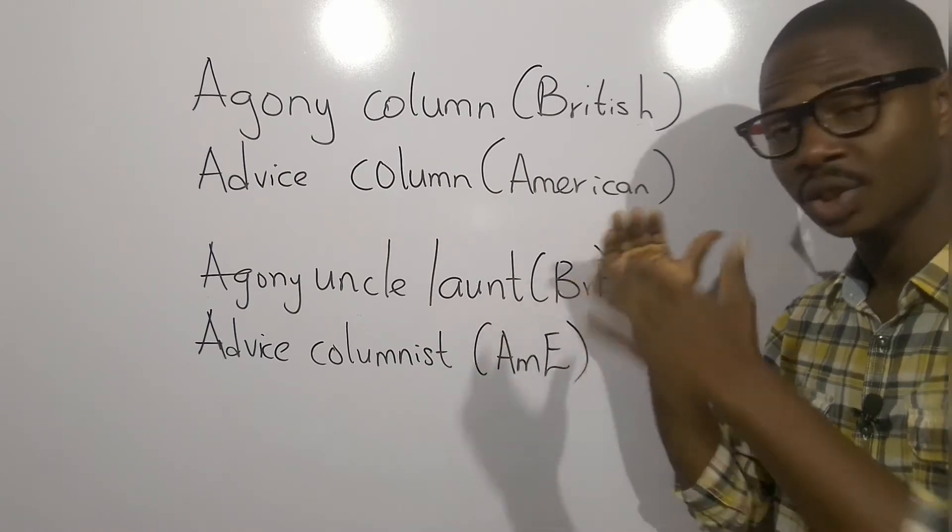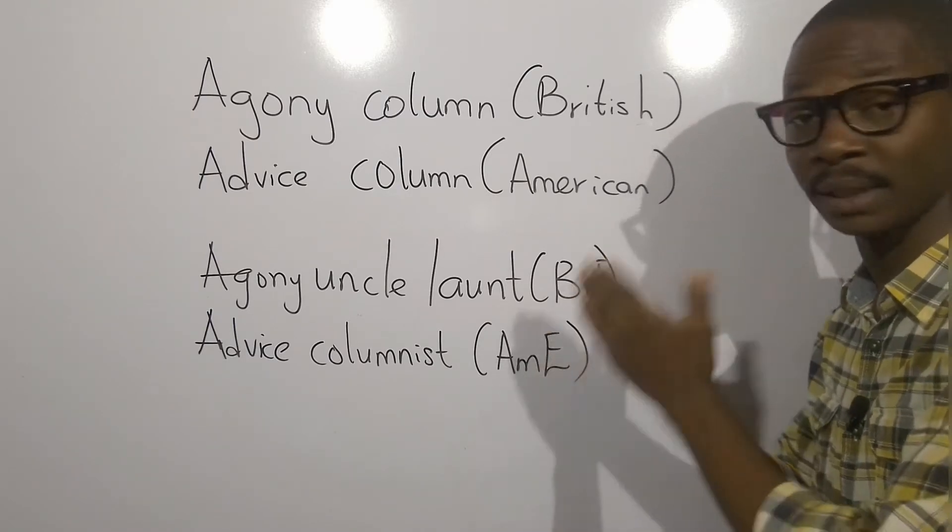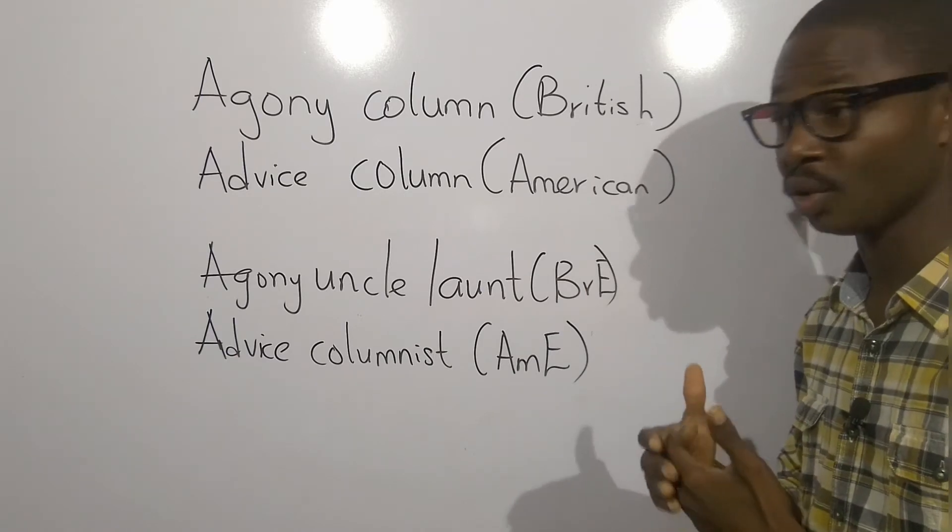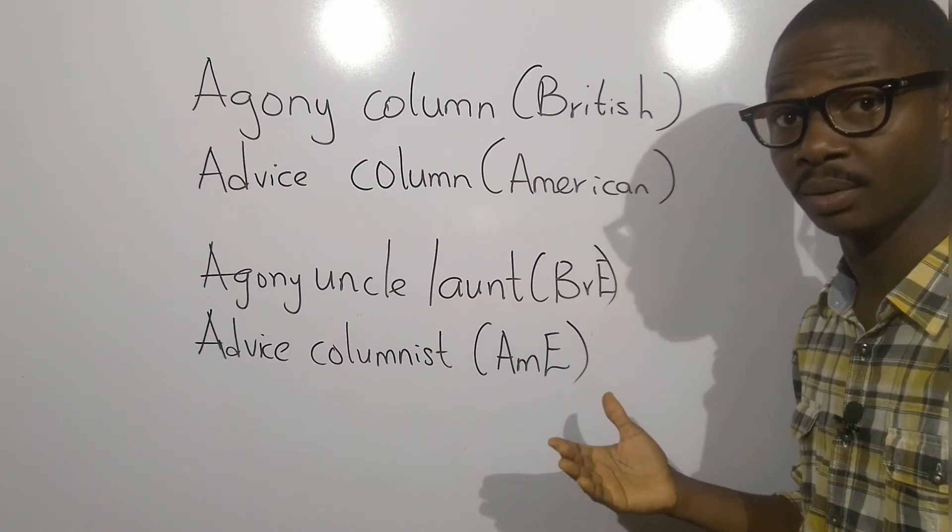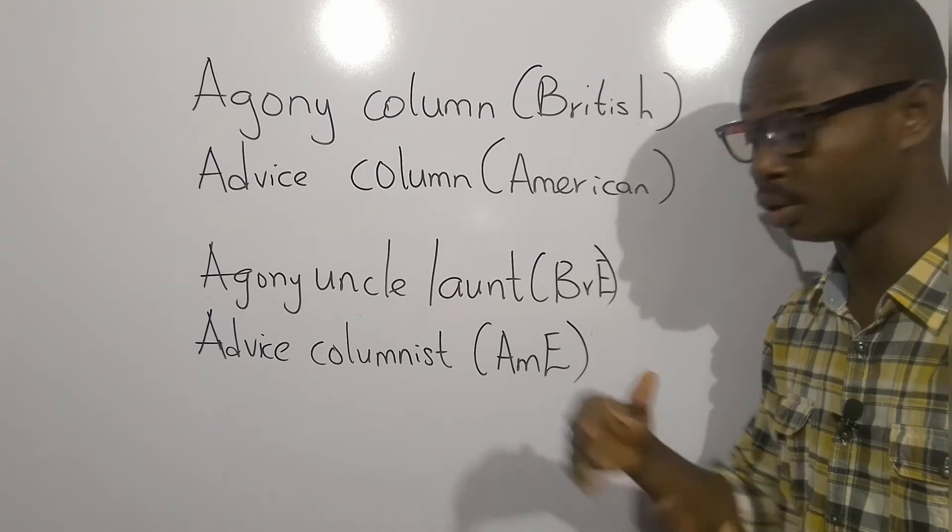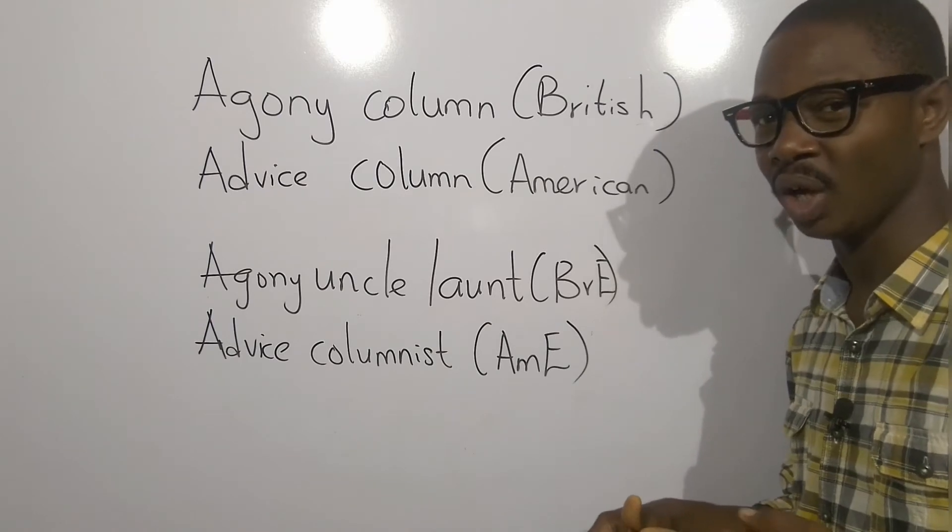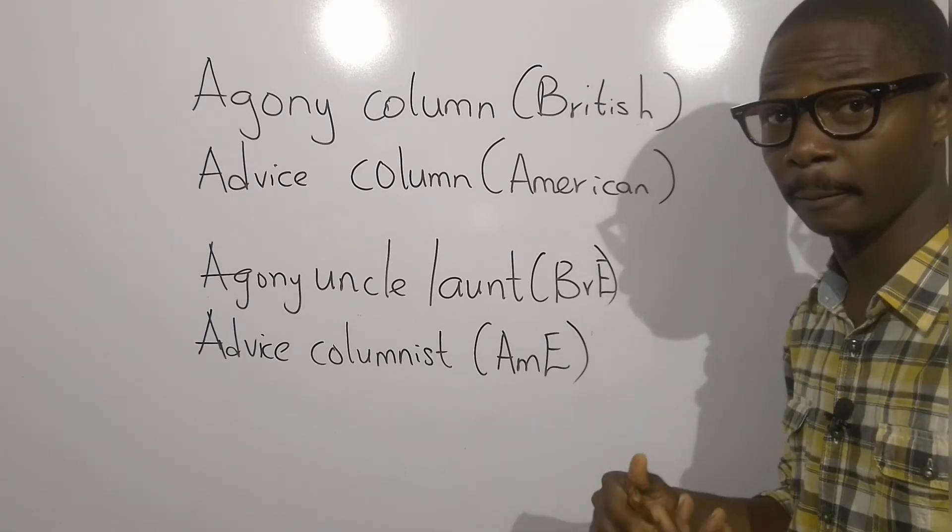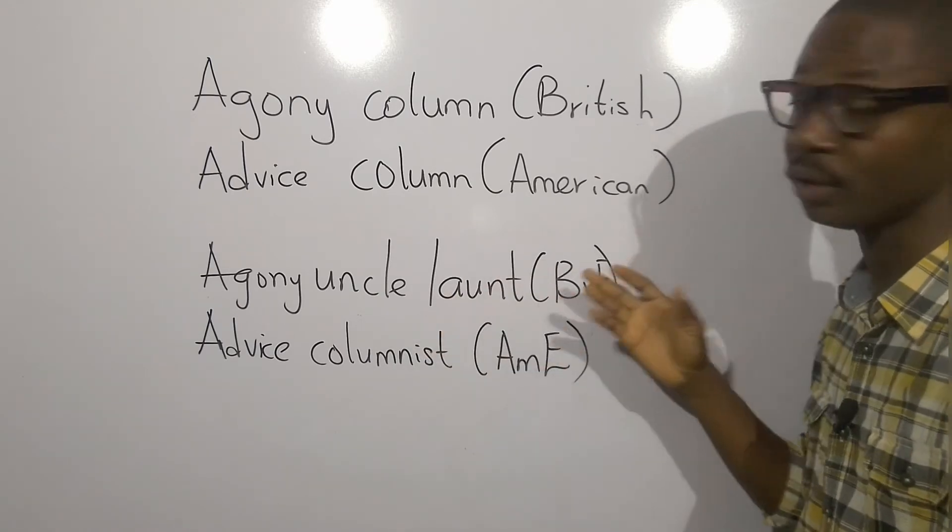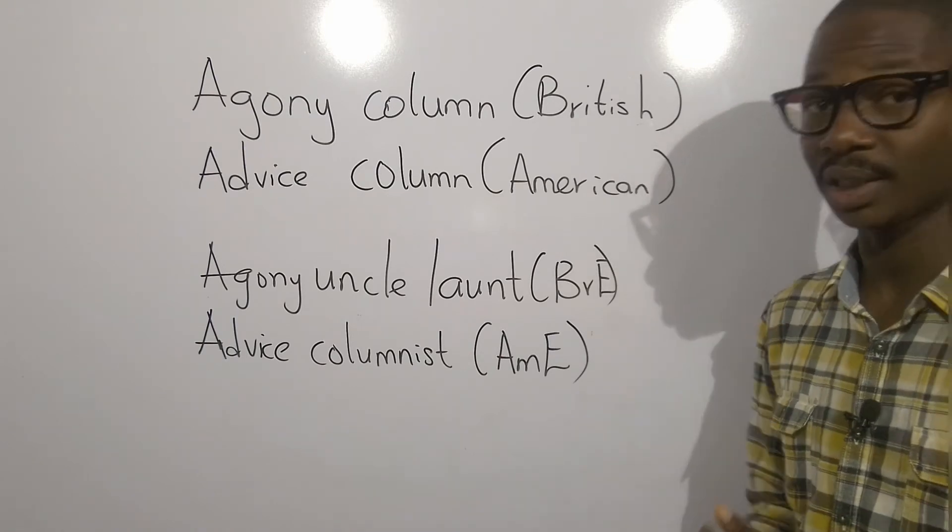These are the people that respond to the message or to the challenge that has been given online or in the newspaper. And if it's online, you're going to get an email, but if it's a newspaper, the solution or the response is going to come maybe in the next edition of that magazine or newspaper. So, they call them agony uncles or agony aunts in British English, while in American English, they call them advice columnists.